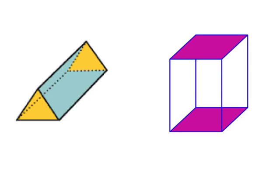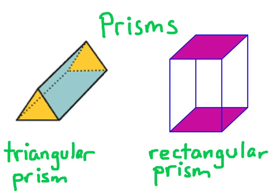These two three-dimensional objects that we are looking at are called prisms. On the left, we have a triangular prism, while on the right, we have a rectangular prism. Prisms are named by their bases, and bases are just special faces. In a prism, you know it's a base if it has an opposite that is parallel to it and is the same shape and size. So, here we have two triangles that are parallel and the same shape and size, and for the rectangular one, two rectangles that are parallel and opposite each other. That's how we know this is a triangular prism and a rectangular prism.